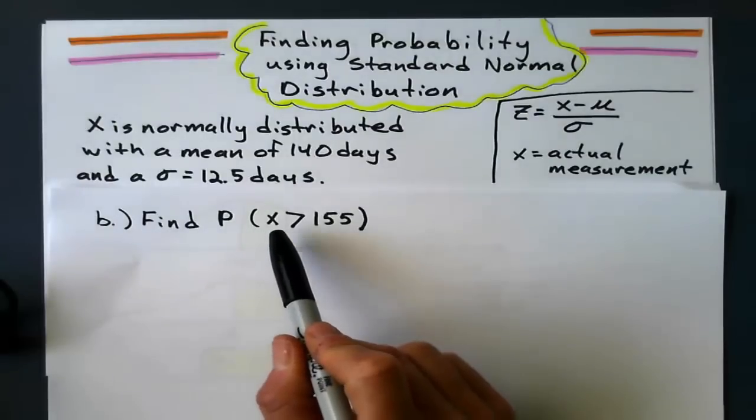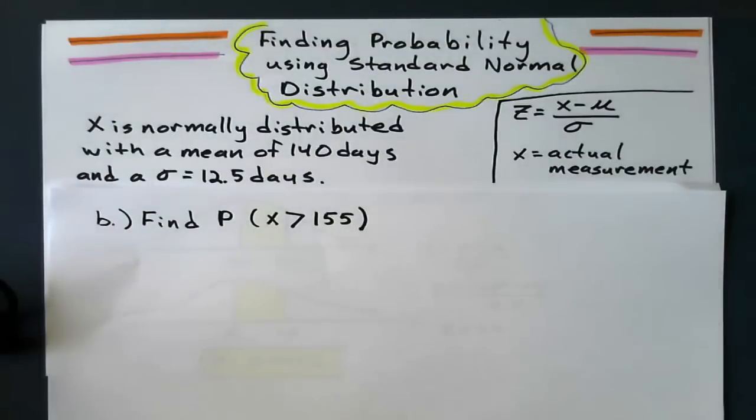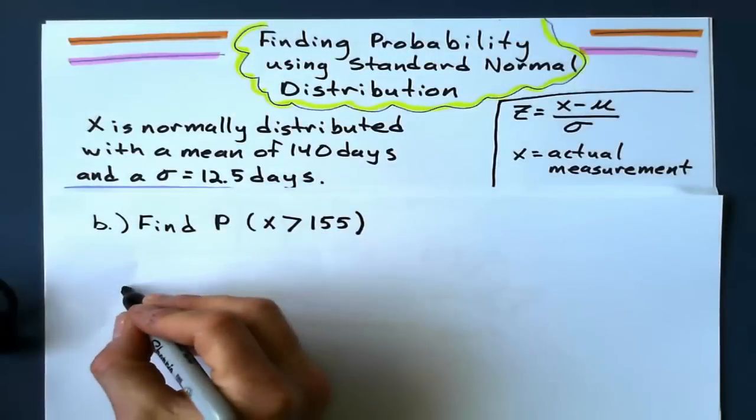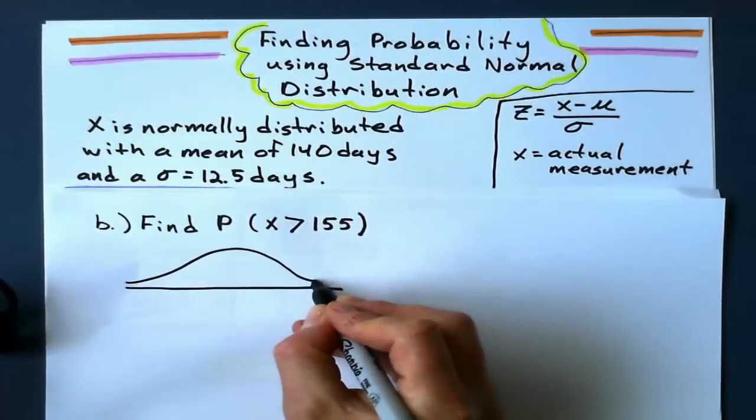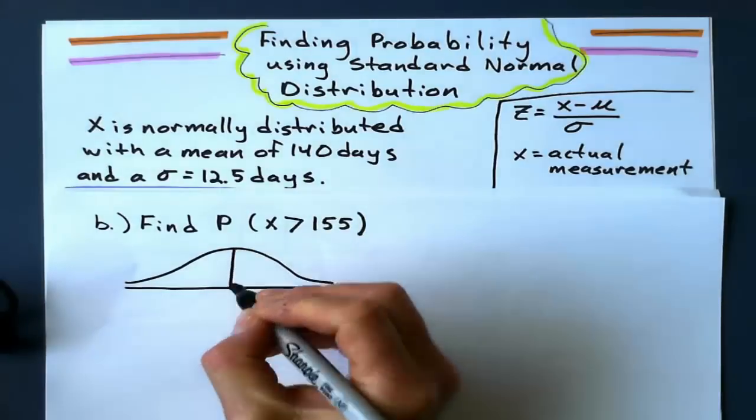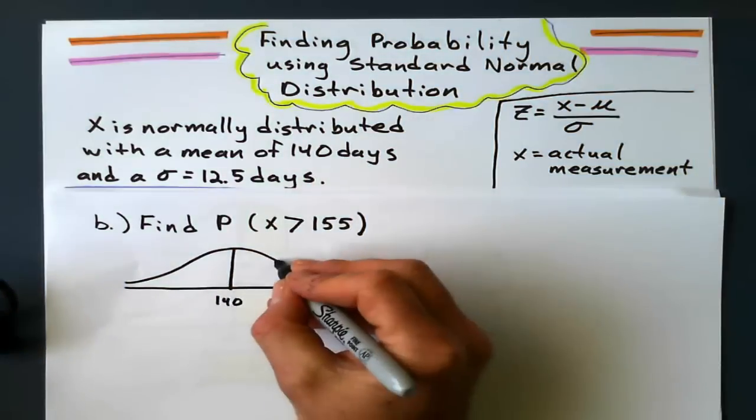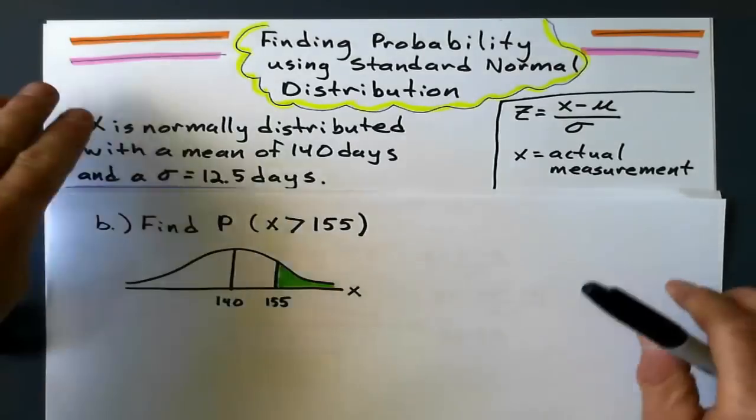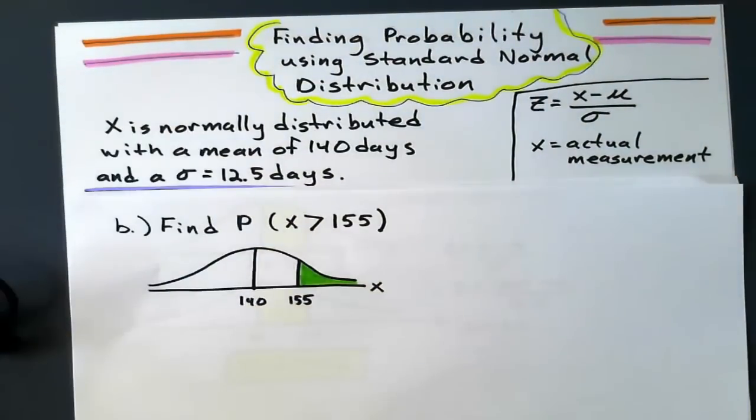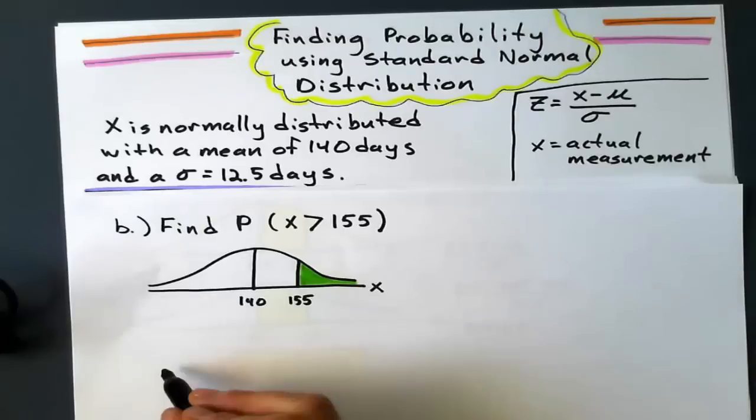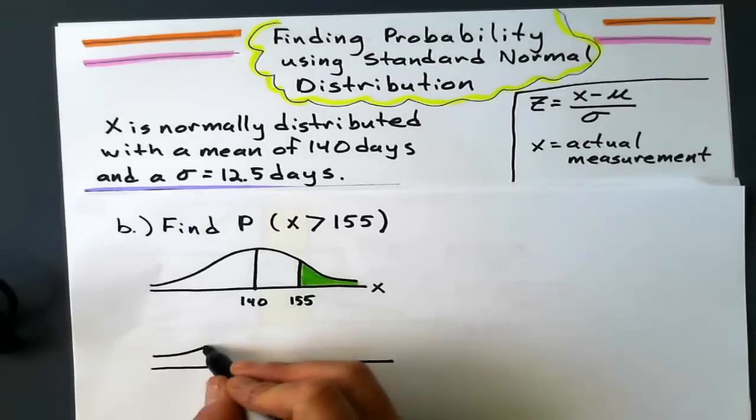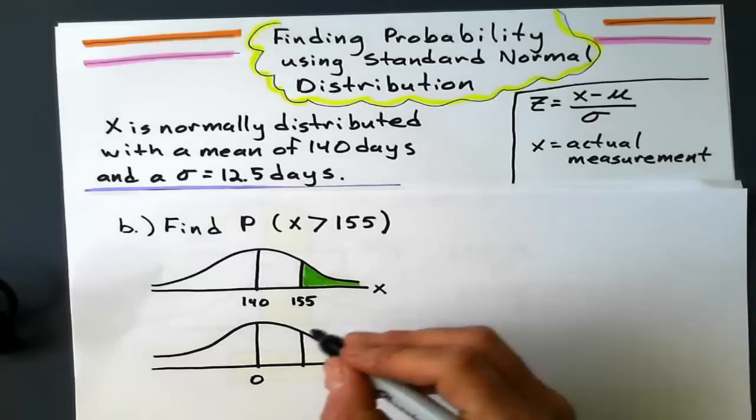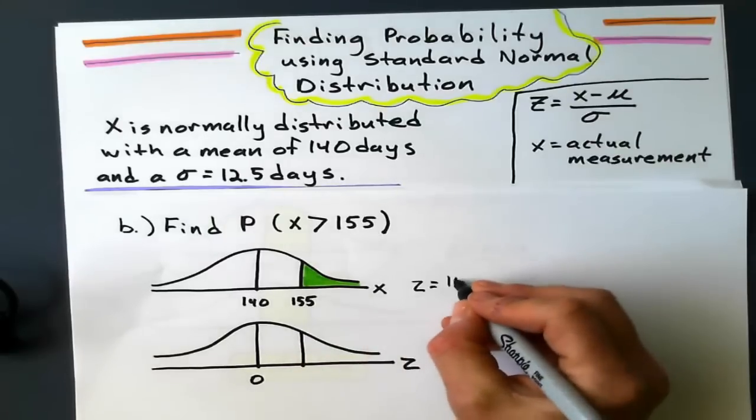Next step. Find the probability that X is greater than 155. Greater than, more than, whatever you want to call it. So let's go through the steps here. Draw the X curve. Where the mean is still 140. And 155 is going to be to the right of the mean. 155. And greater than that is shaded to the right. So let's convert that to a Z value. The standard normal mean will always be 0. Let's convert 155 to a Z value.